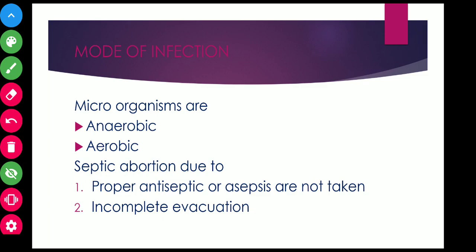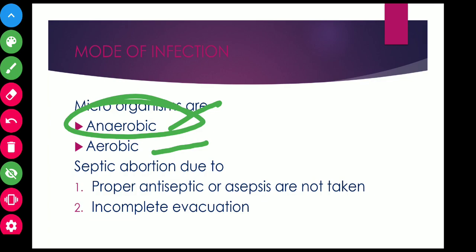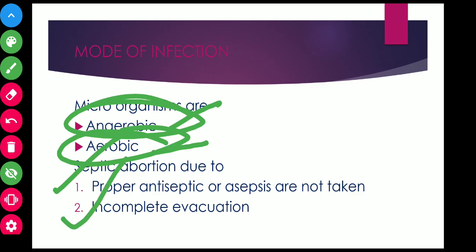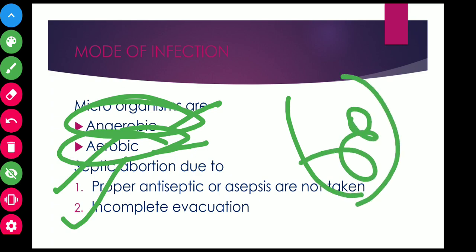Regarding mode of infection, the microorganisms involved in sepsis are usually anaerobic and aerobic. Anaerobic organisms include Clostridium, Tetanus bacillus, and Streptococci. Aerobic organisms include Escherichia coli, Klebsiella, Staphylococcus, and Pseudomonas. Mixed infection is more common. The increased association of sepsis in unsafe induced abortion is due to not maintaining proper antiseptic or aseptic conditions and incomplete evacuation leaving retained parts inside the uterus.